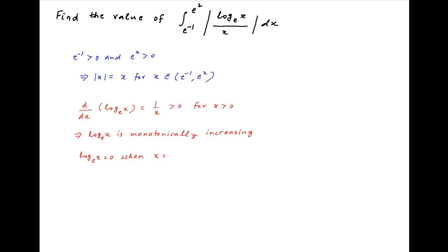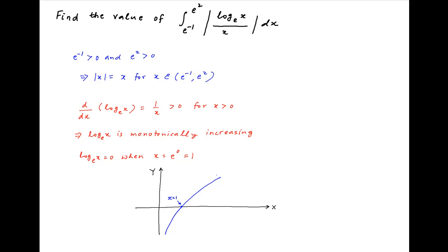Now ln x is equal to 0 when x is equal to 1. So we use the above information to plot ln x on the Cartesian plane. At x equal to 1, ln x is equal to 0. As x tends to 0 from the positive side, ln x tends to minus infinity, and as x tends to infinity, ln x also tends to infinity.